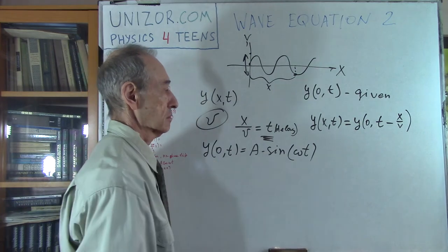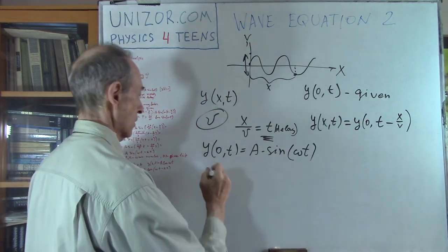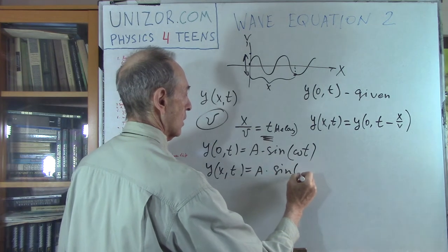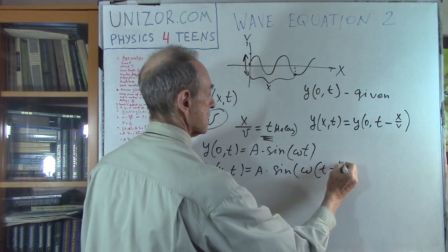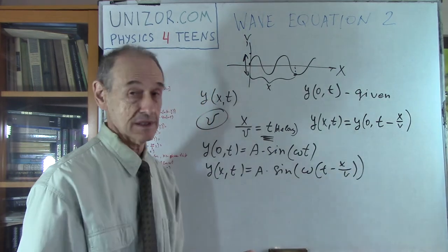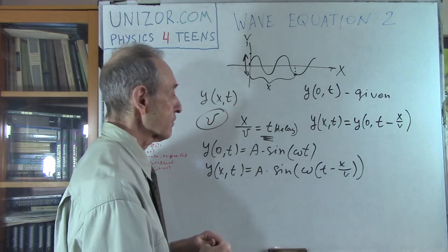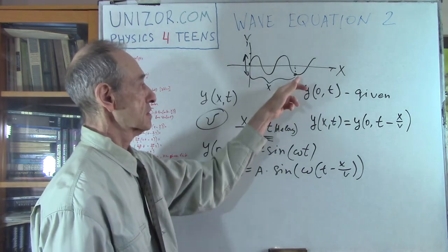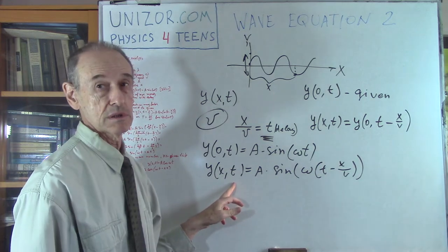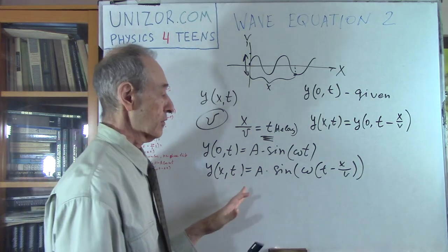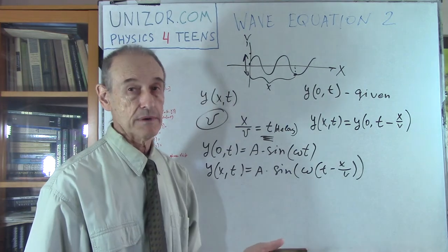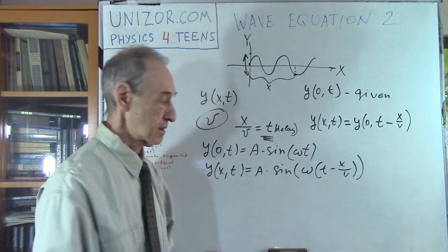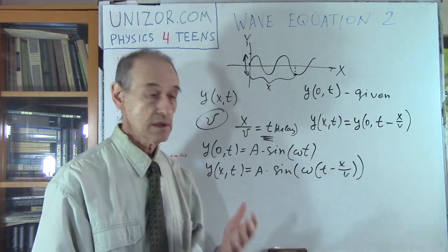So we know that Y(x, t) = Y(0, t − x/v) = A sine of omega times (t − x/v). That's basically it — everything else is just transformation of this equation, which completely defines the displacement of a point at any distance X and at any time T. However, people usually introduce certain other characteristics of oscillations and replace one variable with another.